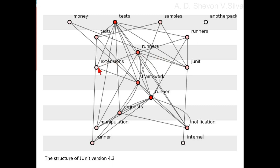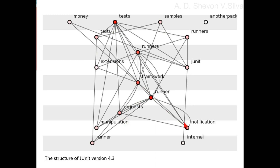Here, JUnit interacts with runners, tests, and framework. Here, JUnit also interacts with runners, samples, tests, runners, and money. Here, framework interacts with samples, runners, tests, money, extensions, requests, runner, and notification.